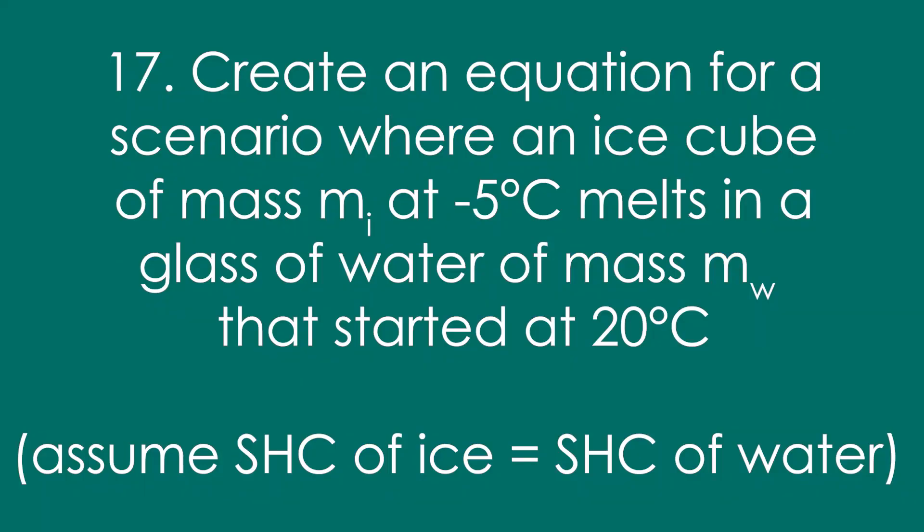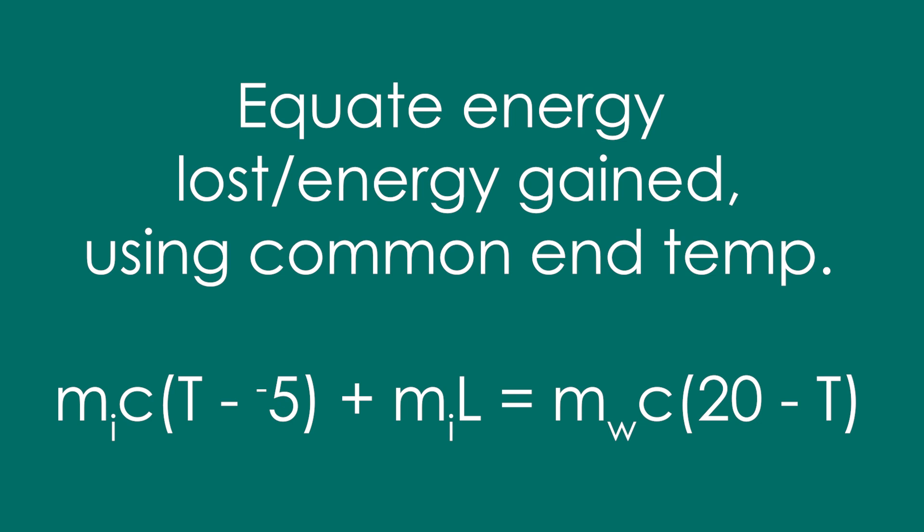Question 17: Create an equation for an ice cube of mass m_I at minus 5°C melting in a glass of water of mass m_W starting at 20°C. It's about equating energy gained by the ice and lost by the water. On the left: SHC for the ice raised to a common temperature T, which is mC·ΔT, plus m_I times the latent heat of fusion. That equals the energy lost by the water: mC·ΔT, where the temperature change is 20 minus T. Rearrange and factorize for T.